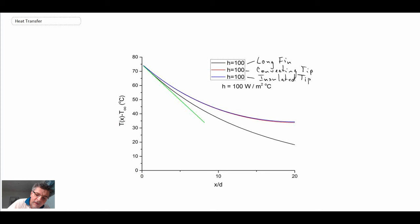And what you can see is that the long fin is here. And the convecting and insulated tip are here. So those two solutions are quite similar. And what we're looking at here, this is x over d on the horizontal. So this would be the base of the fin.